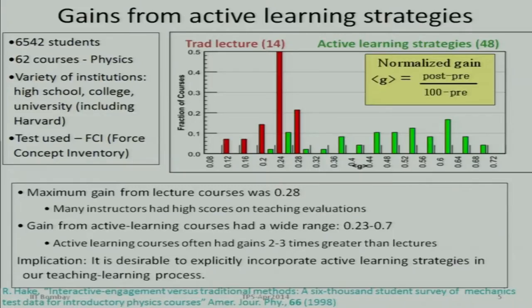There is some data: 0.2 to 0.3 represents bad lecturing but lots of activities, while 0.6 to 0.7 represents good lecturing and activities. So good lecturing is a given.